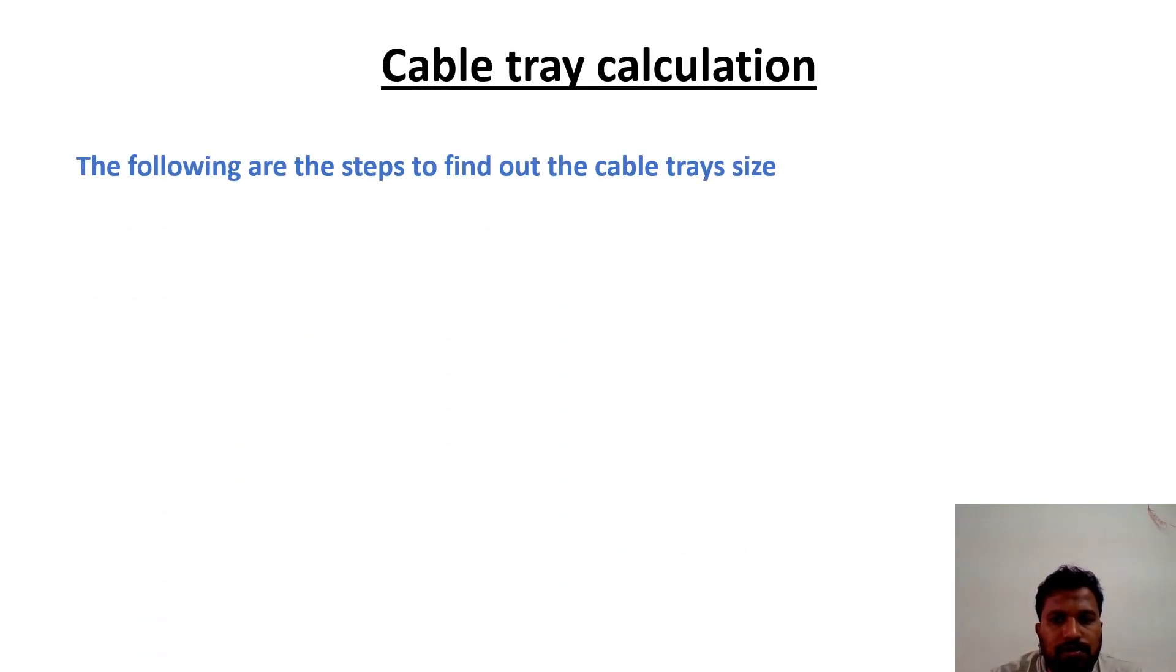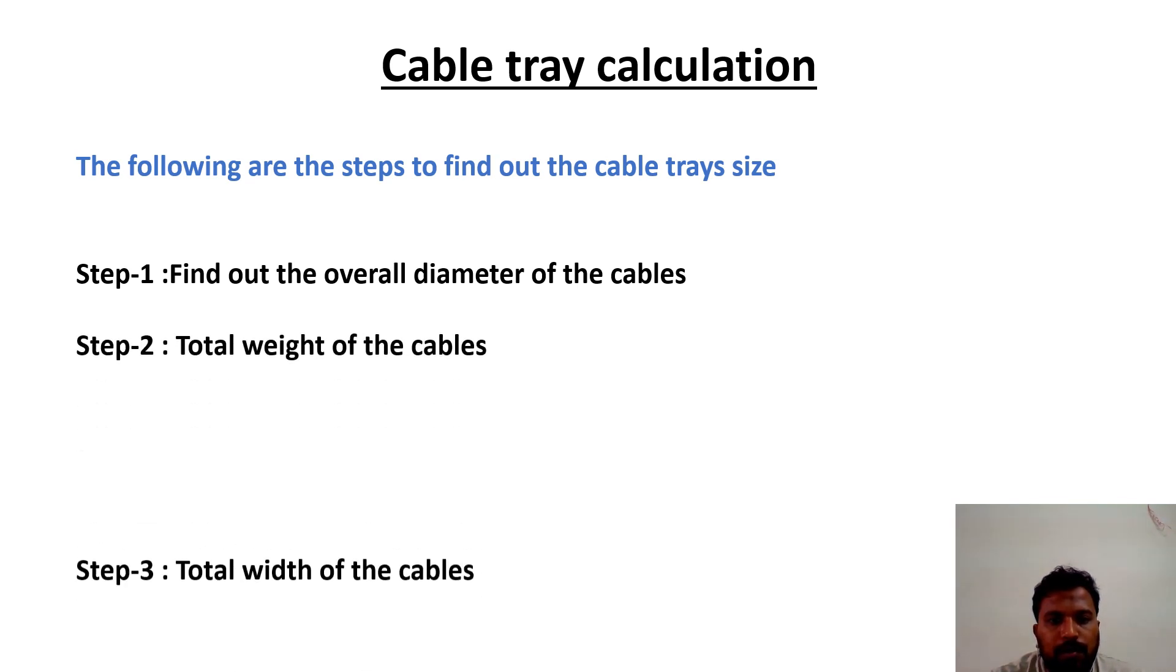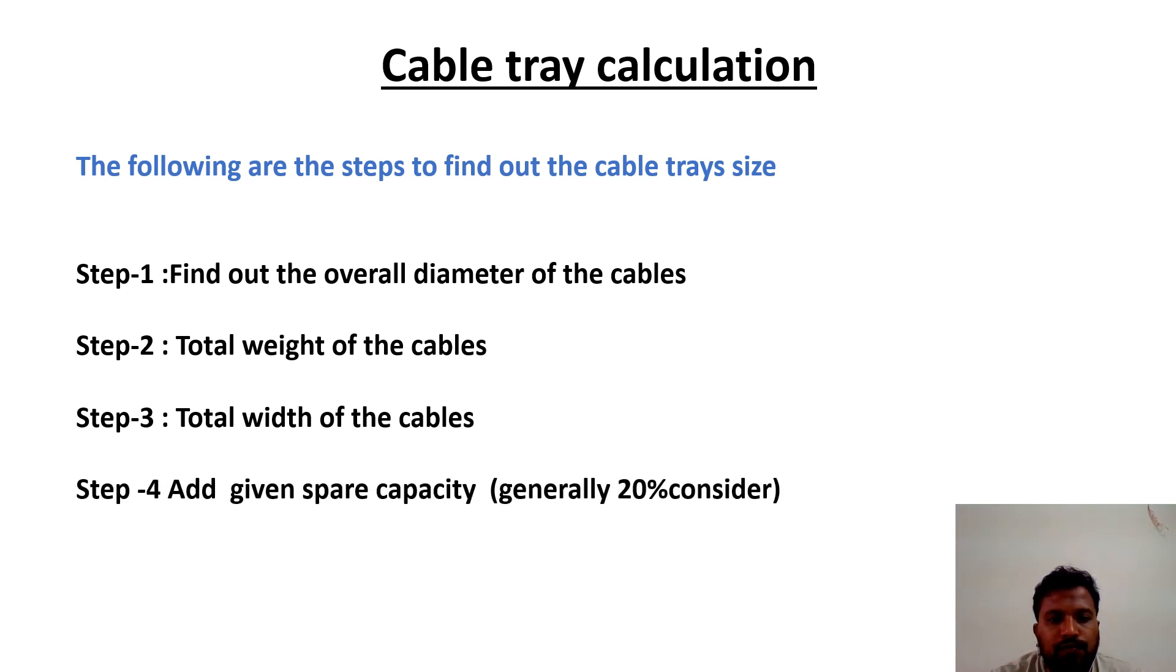Cable tray calculations. To find out the cable tray calculations, we have a 4-step process. Step 1: find out the overall diameter of the cables. Step 2: total weight of the cables. Step 3: total width of the cables. Step 4: add a given spare capacity. Then choose the cable tray size.